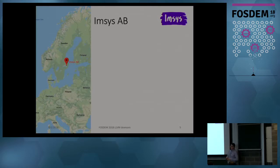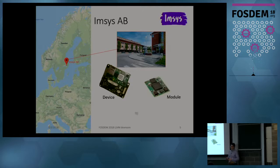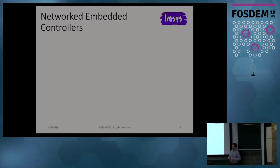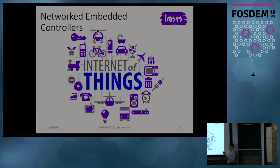IMSIS AB is a Swedish semiconductor SME located in the North Stockholm area. We work with our own proprietary processor core. We sell devices, modules, the processor IC, and in the future we plan to sell IP as well. The company has a history as a supplier of network-embedded controllers with some special features. But now, we want to retarget our processor for the Internet of Things, and using LLVM is part of this retargeting.